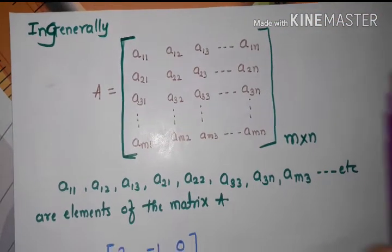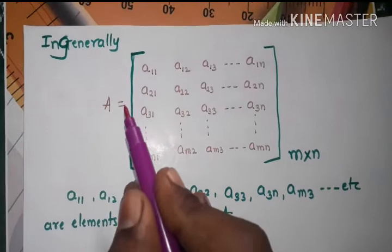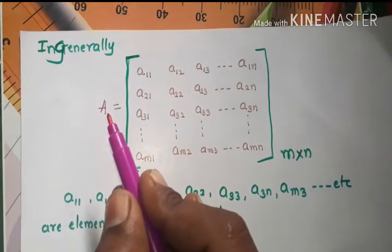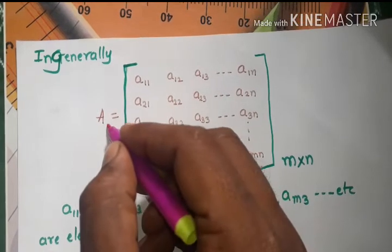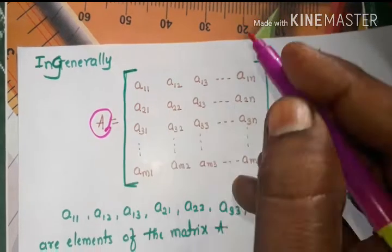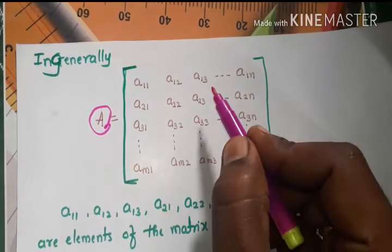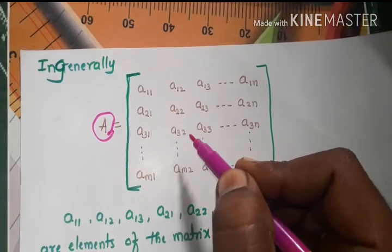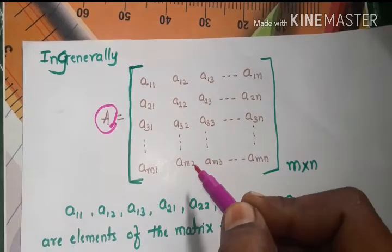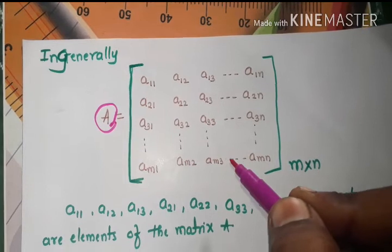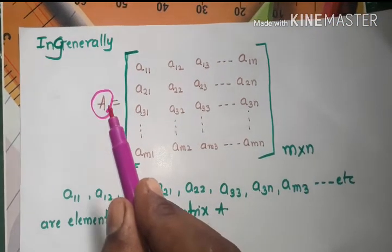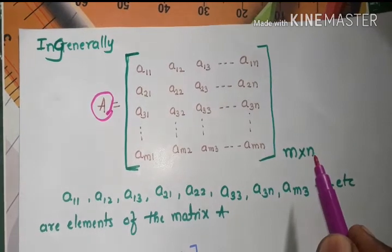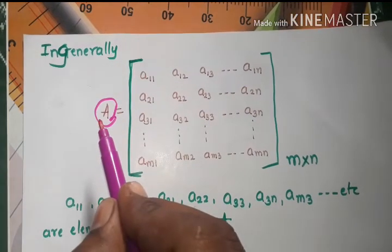In general, matrices are denoted by capital letters. A is the matrix with elements a11, a12, a13, a1n, a21, a22, a32, a3n, am2, am3. These are the elements of the matrix A, okay? And m by n is the order of matrix A.